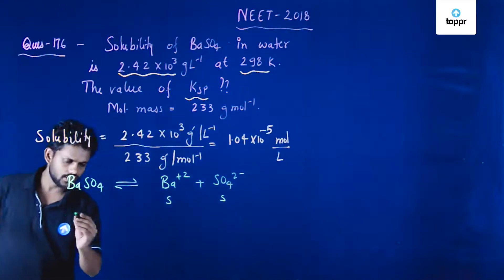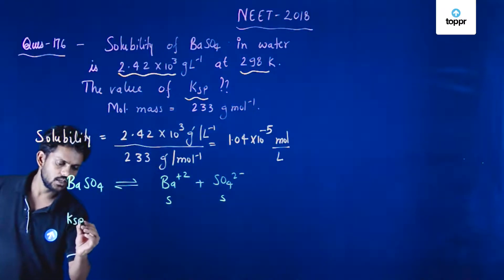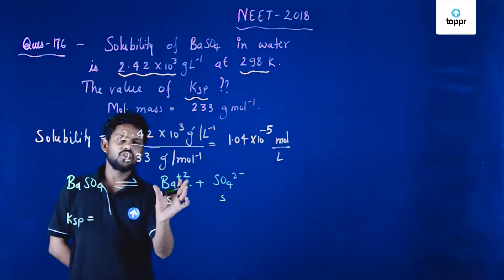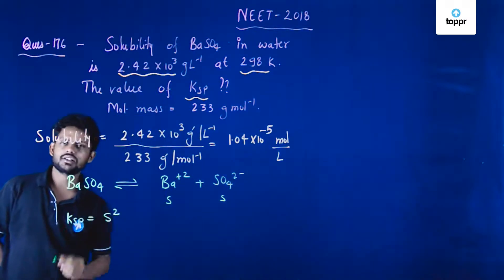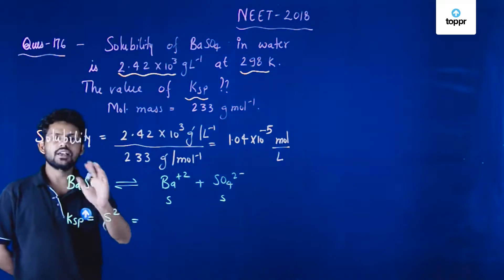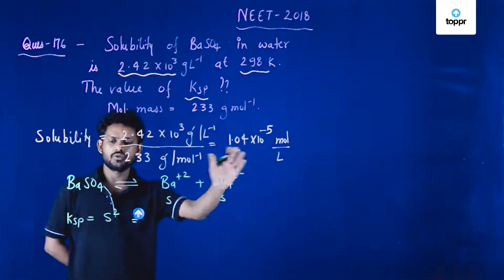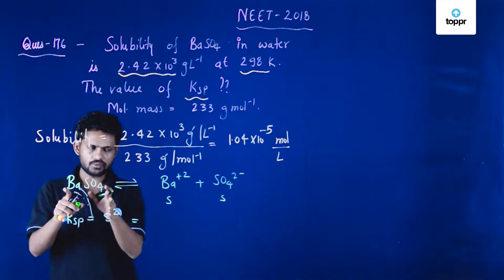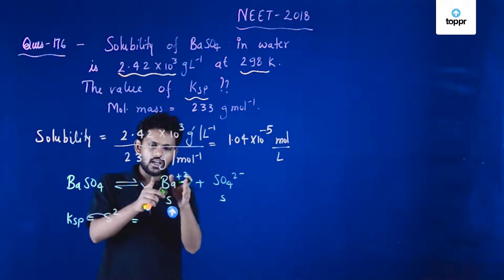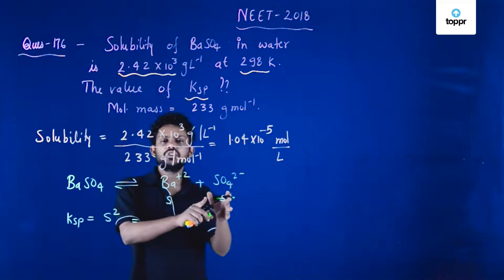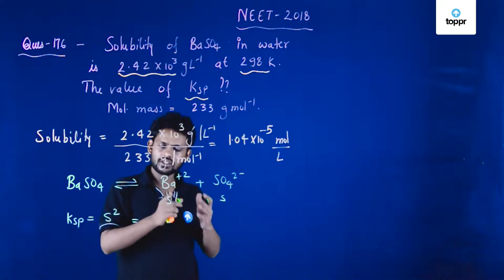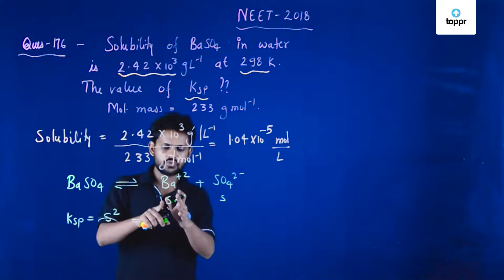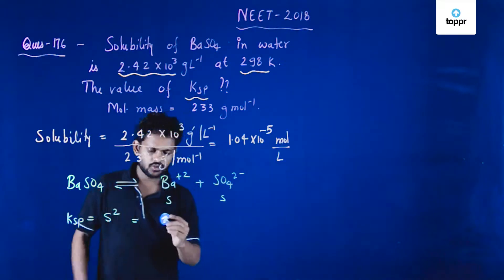The Ksp is simply the multiplication of the product concentrations, which is S squared, and we know the value of S. If you take some amount of barium sulphate, this much amount is going to be soluble, meaning this much will dissociate into water. We already know the value of S.